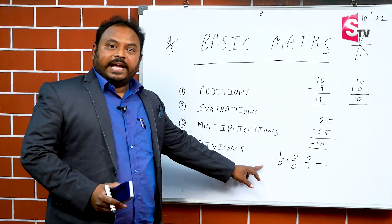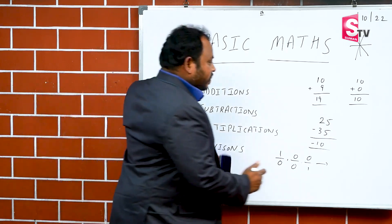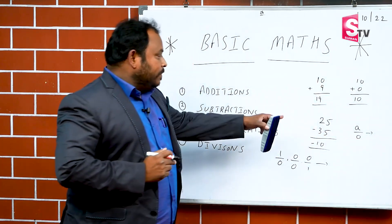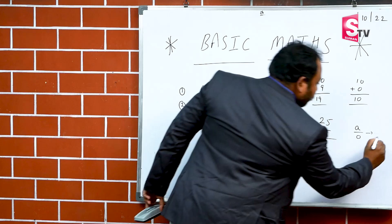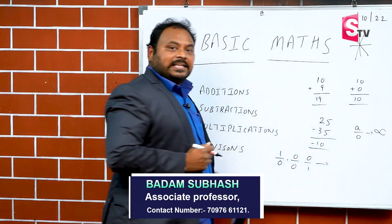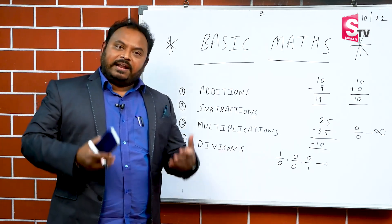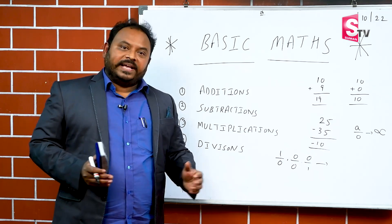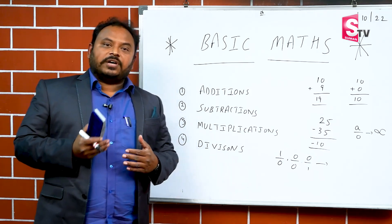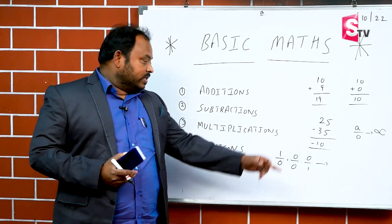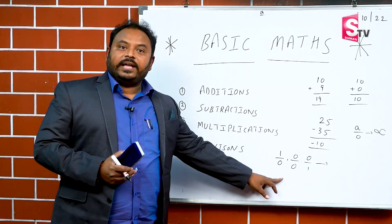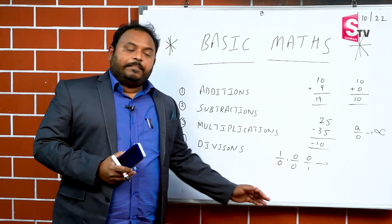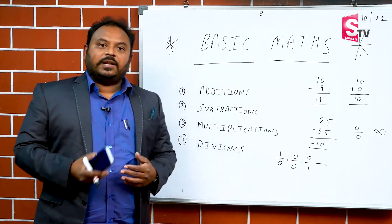This is a basic principle. Anything divided by 0 — A by 0 where A means anything — anything divided by 0 means infinite value. I asked, have you heard about this? No, sir. I have never heard about infinite. They are very poor in the basics. Now, 0 by 0 is the indeterminate form, and 0 by 1 is 0.